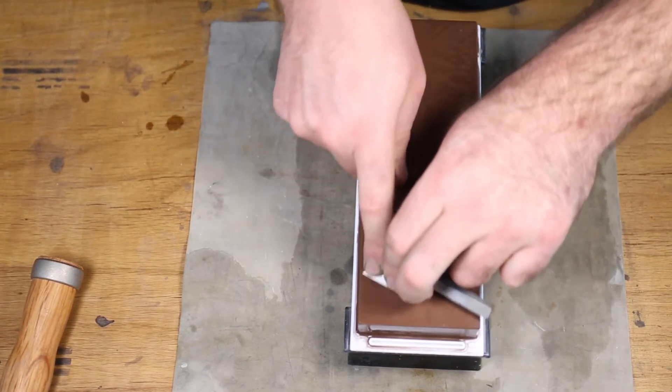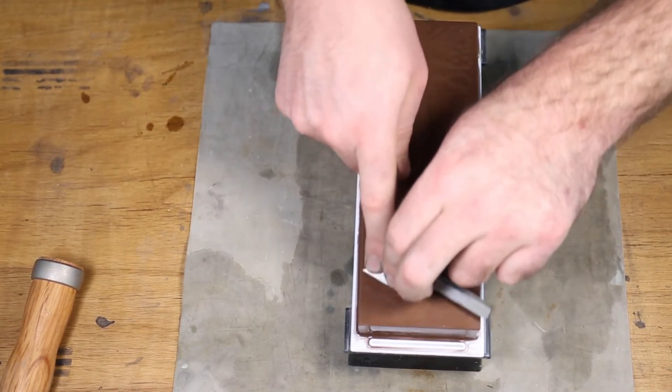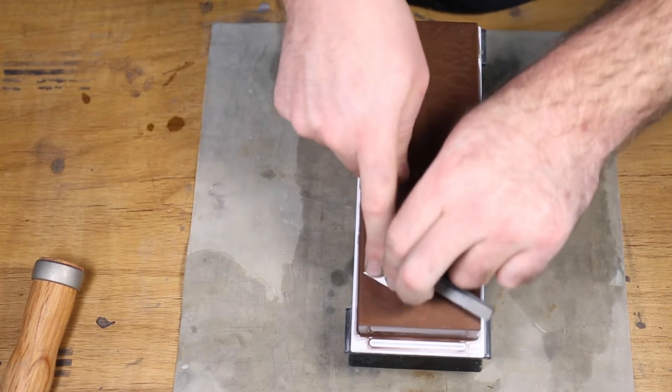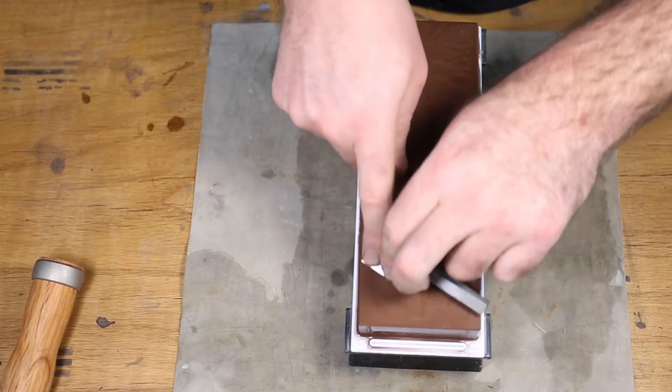The other area the 800 shines is as a stepping stone above the 320. It is excellent at removing the heavy scratch patterns left by the 320 and will make the time spent on the 1000 stone much easier.